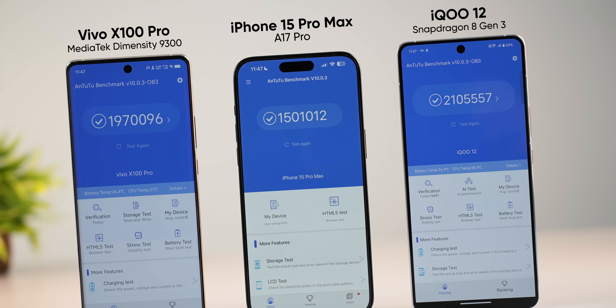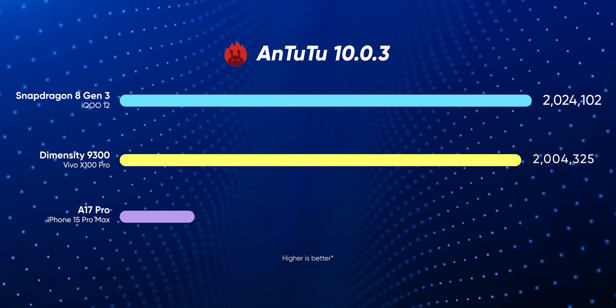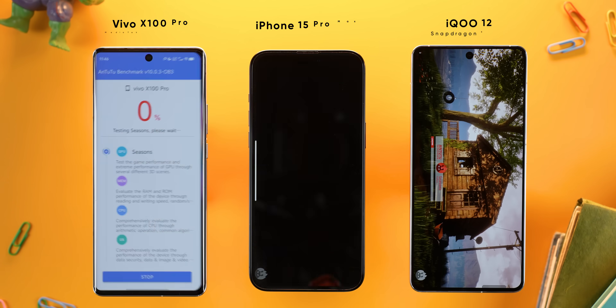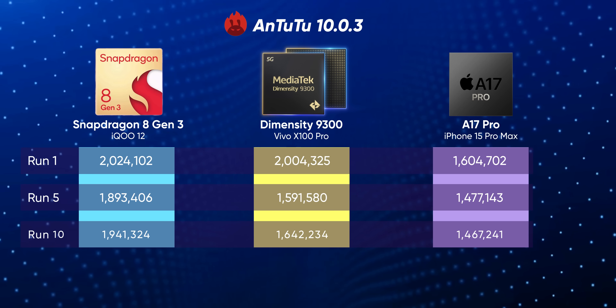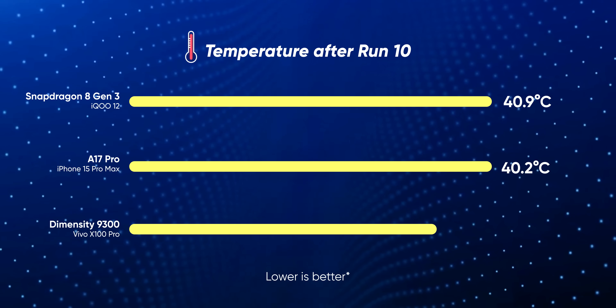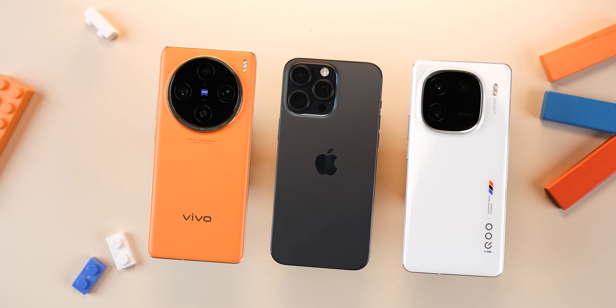Looking at their AnTuTu scores, Qualcomm and MediaTek are once again way ahead of Apple. The Snapdragon 8 Gen 3 leads the chart with a score of just over 2 million, followed closely by the Dimensity 9300, while the A17 Pro sits at the bottom with 1.6 million. To check performance under stress, I ran AnTuTu nine more times — the results were not that great, mostly for MediaTek, which lost 18% of its peak performance after the 10th run. The Vivo X100 Pro also hit a staggering 45 degrees Celsius. Note that since I cannot control variables like smartphone cooling systems, power profiles, and OS optimizations, temperature data in this context is just a point of reference. Also, AnTuTu is not a cross-platform tool, so you can't directly compare Android and iOS scores.